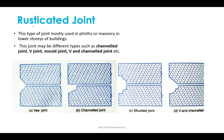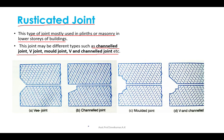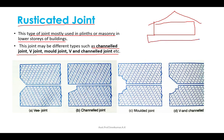The rusticated joint is mostly used in plinths or masonry in lower stories of buildings. The joint may be of various types such as channel joint, V-joint, marble joint, and V-and-channel joint. It is used in stones whose edges are sunk below the general level, for plinths, quoins, outer walls of lower stories, etc. Such a joint gives a massive appearance to the structure.